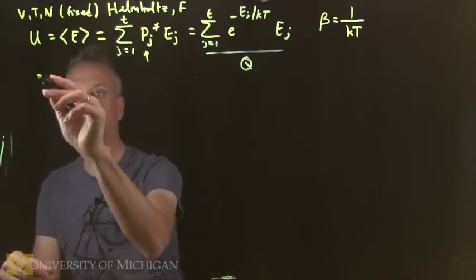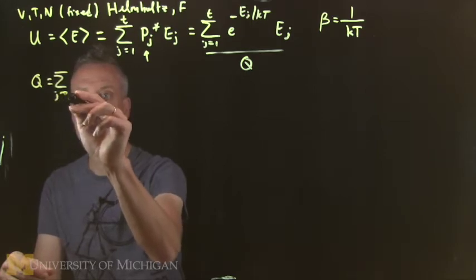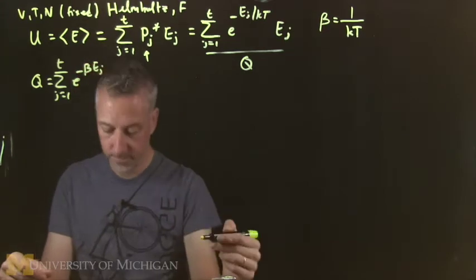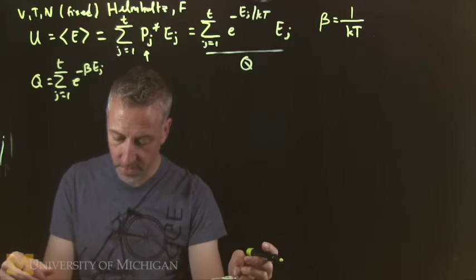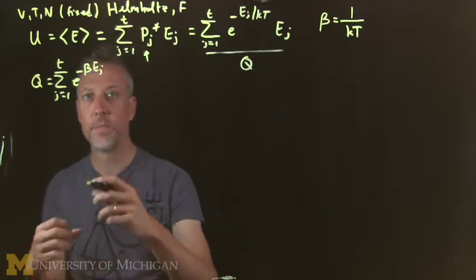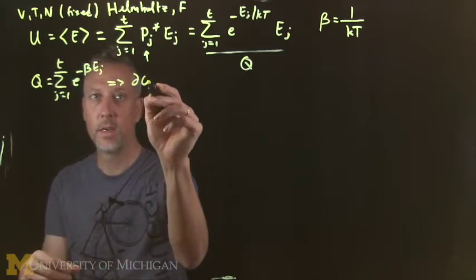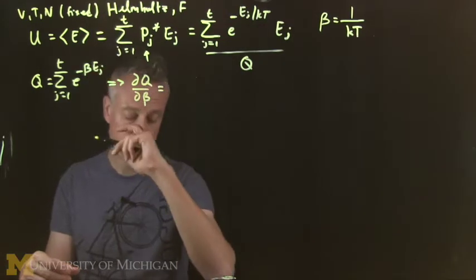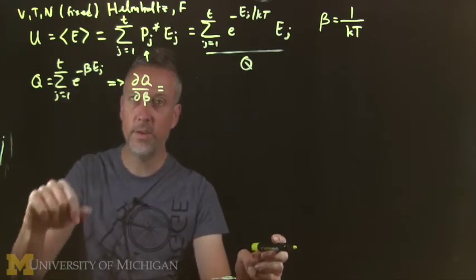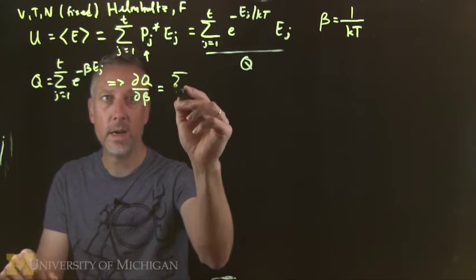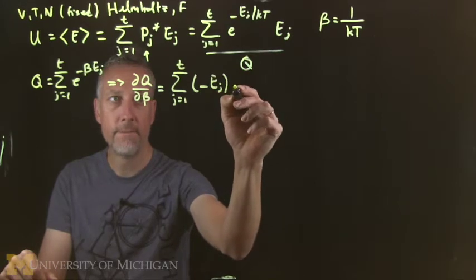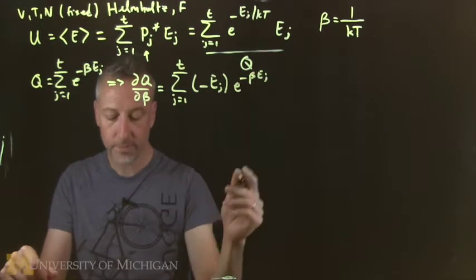So because of this, we know what Q is in this new notation. Sum on j, e to the minus beta e_j. So that's the partition function. So the first thing we want to do is ask ourselves, what is the beta derivative of Q? So we're going to ask, what's dQ/dβ? Well, you can look at it. Beta is the variable, so then e_j with a minus sign is the thing that comes out of that. We do it by terms. So we'll have minus e_j times e to the minus beta e_j.